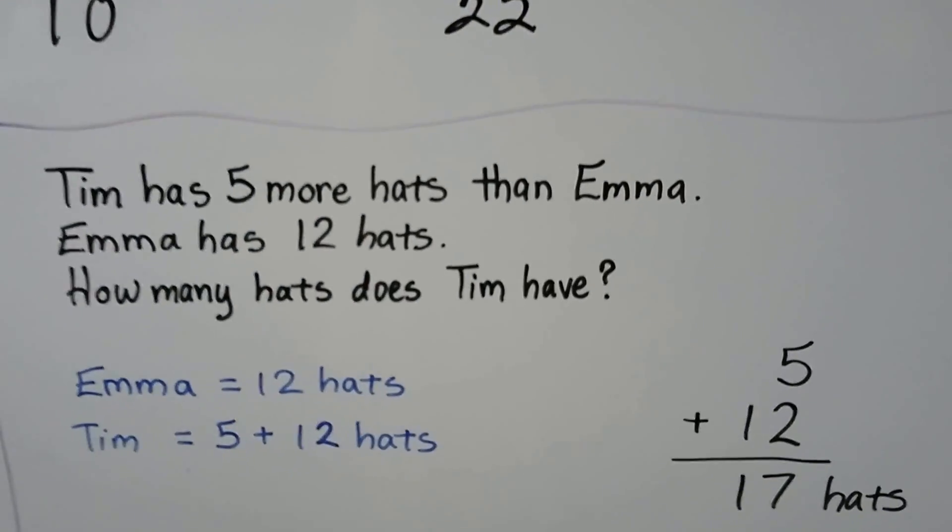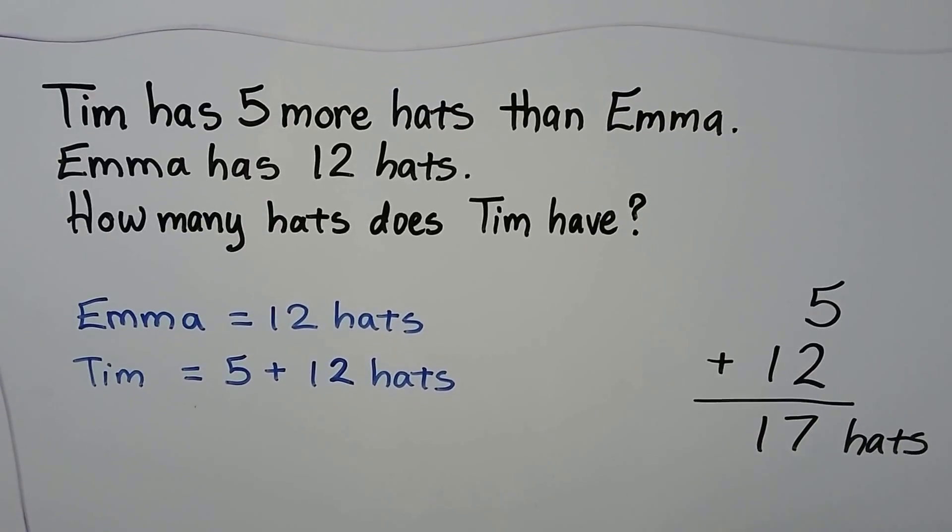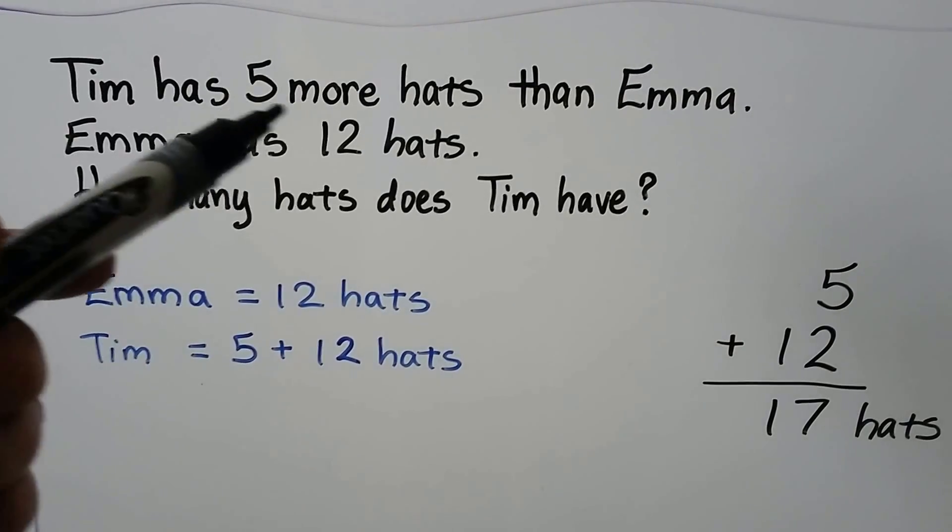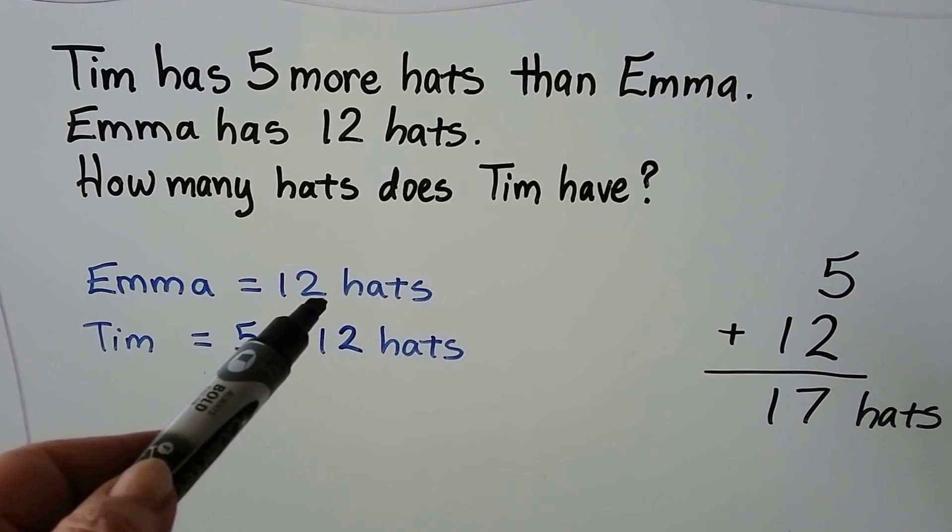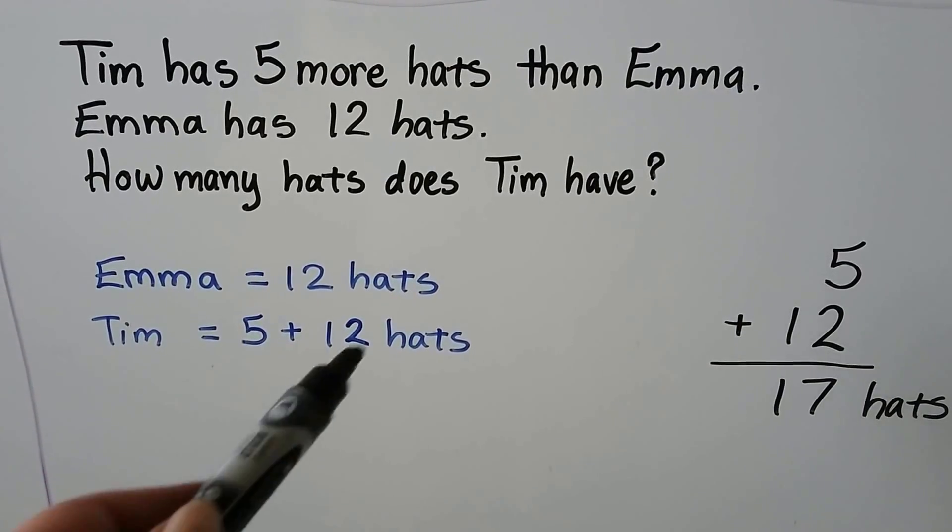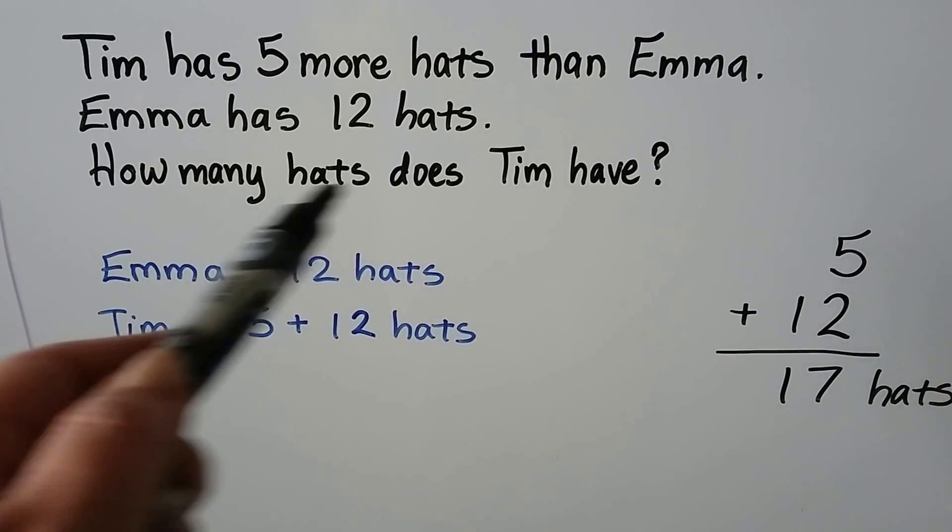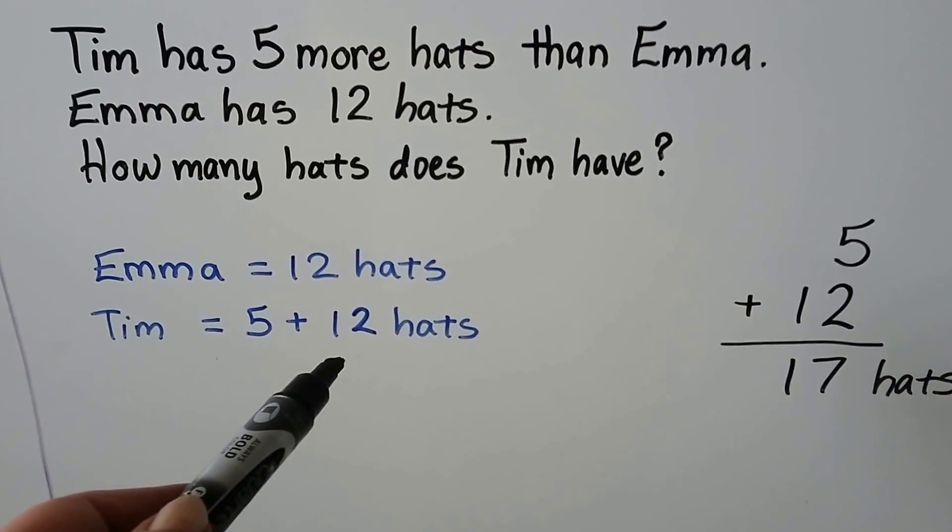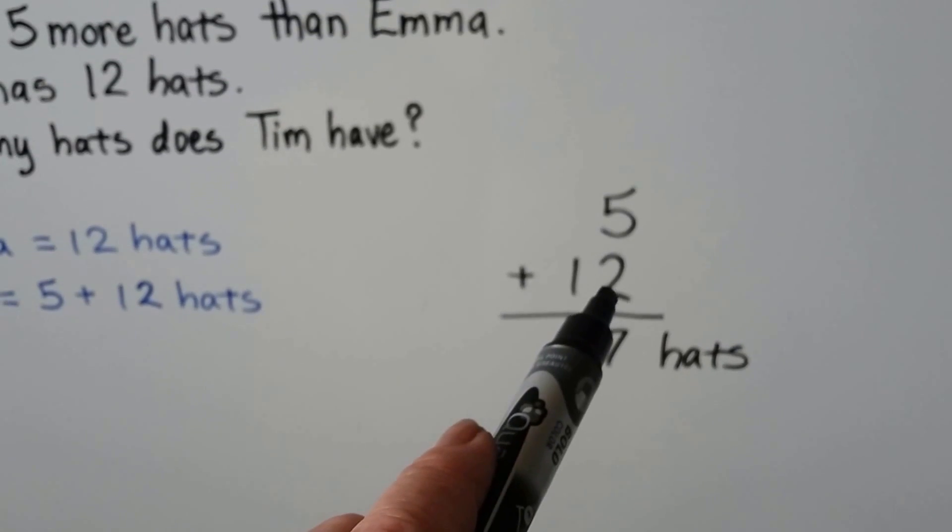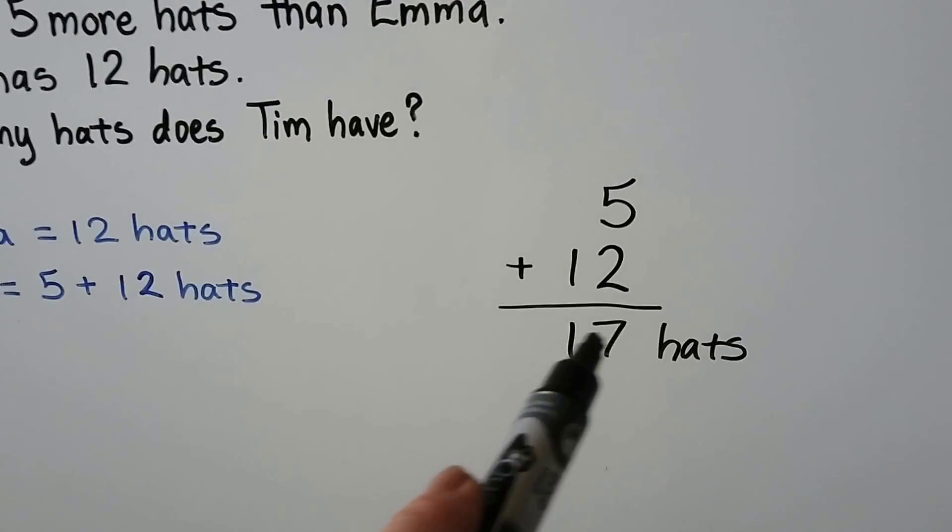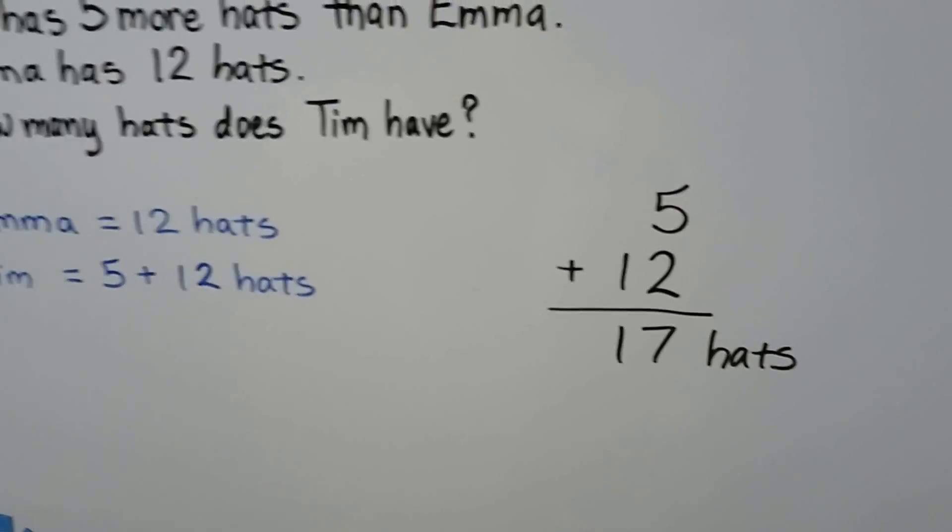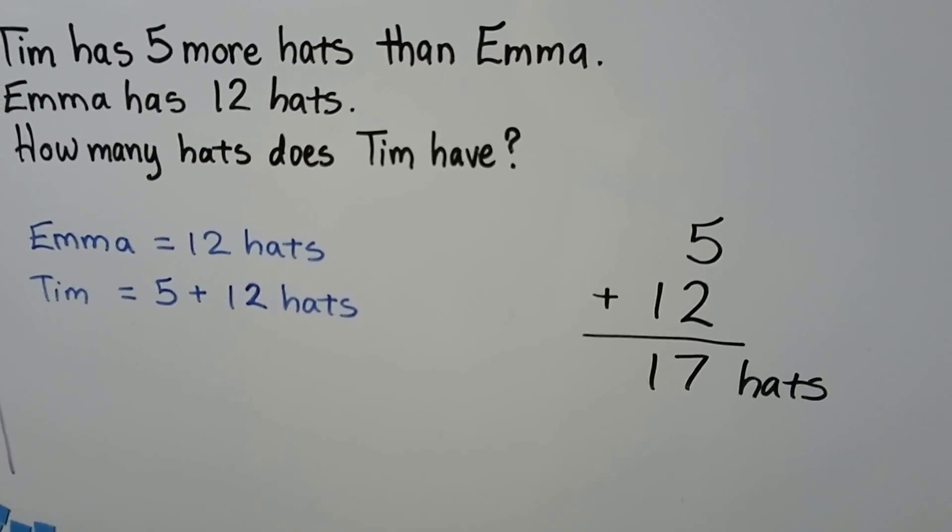Tim has 5 more hats than Emma. Emma has 12 hats. How many hats does Tim have? Well, we know he has 5 more than Emma. Emma has 12, so Tim has 5 plus 12. We need to add the 5 plus 12 to know how many hats Tim has. 5 plus 12 in the 1s place. We can start with the 5 and count on 2, 5, 6, 7. We have 7 in the 1s place. And then there's no 10s here, there's just a 1, so that drops down. That's 17 hats. Tim has 17 hats.